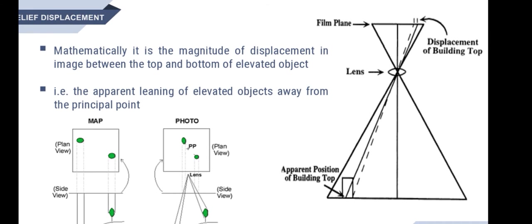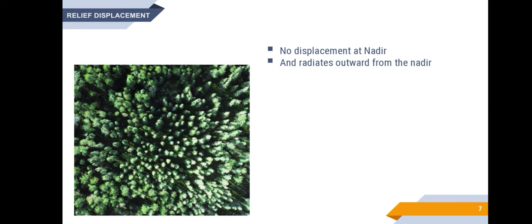In the image shown at the right side of your screen, when the top and bottom of that building — a vertical structure — is projected onto the film plane or the photographic plane, that magnitude is called the relief displacement. There will be no relief displacement at nadir. Relief displacement on any pair of adjacent photographs always occurs in opposite directions because the relief displacement on each photograph radiates outward from a point near the center of a photograph.